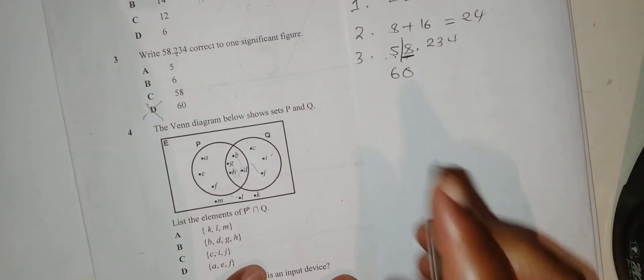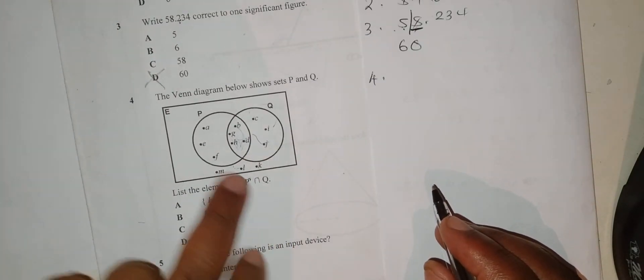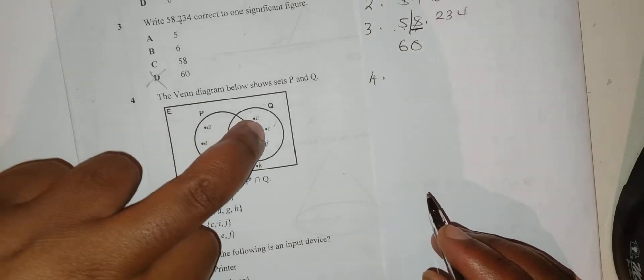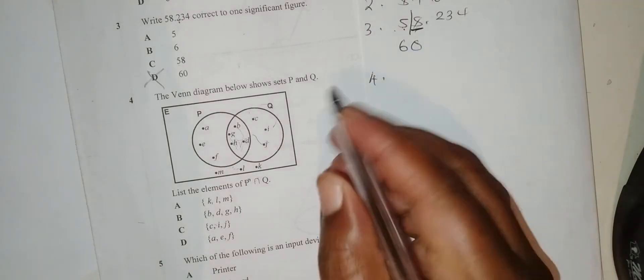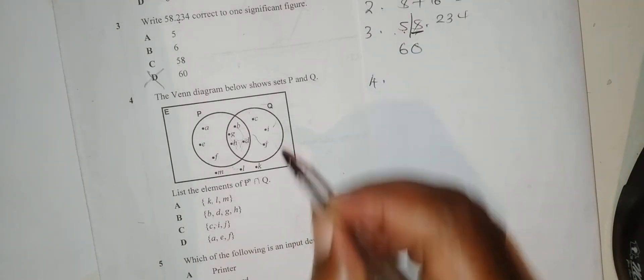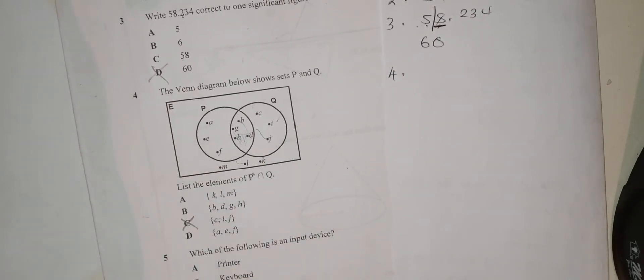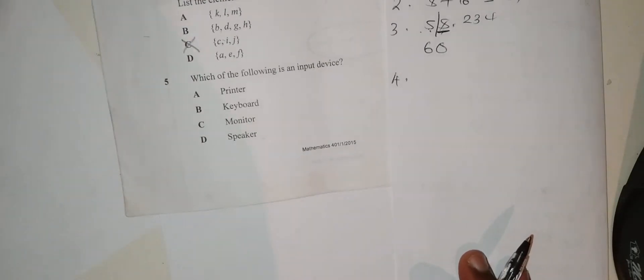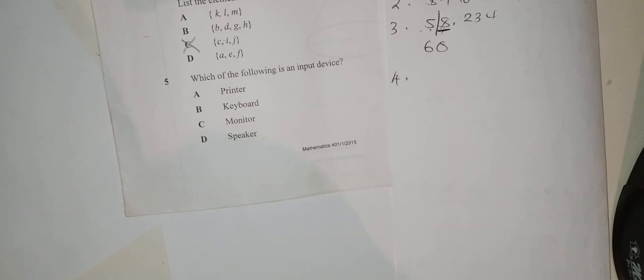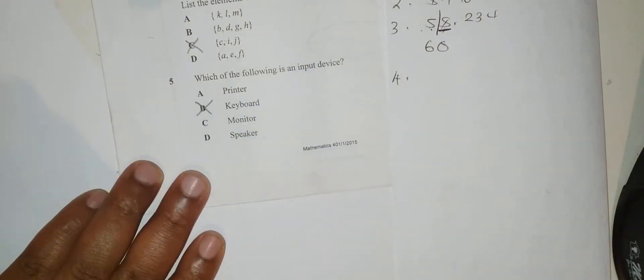Question 4: This is the element of P complement intersection Q. Those elements that are not in P but they are in Q. It is C and J. So C is our answer. Question 5: Which of the following is an input device? An input device is something that we use to input data into the computer system. This is the keyboard.